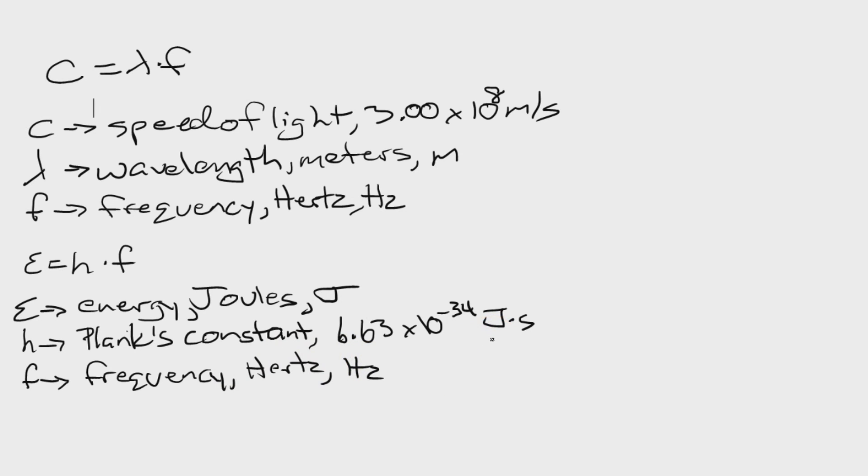So those are the two equations. Basically, what's going to happen is the question is going to give you one of the variables. And since the second variable is always going to be constant, you always know what it is, you'll just be able to solve for the last variable. It's that simple.